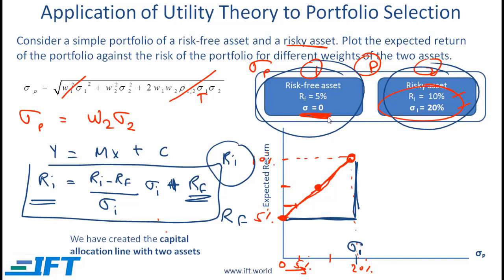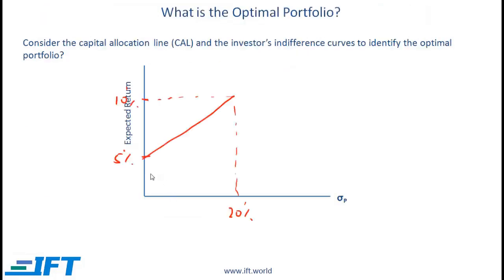Later we will create a capital allocation line with more assets. Assuming the investor only has access to the risk-free asset returning 5% and the risky asset returning 10% with a standard deviation of 20%, the optimal portfolio will lie somewhere along this capital allocation line — ranging from 100% in the risk-free asset at one extreme to 100% in the risky asset at the other.